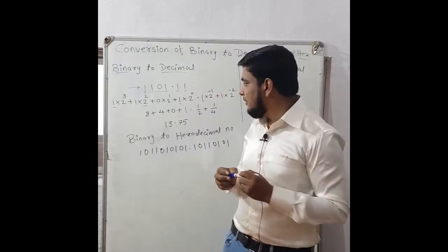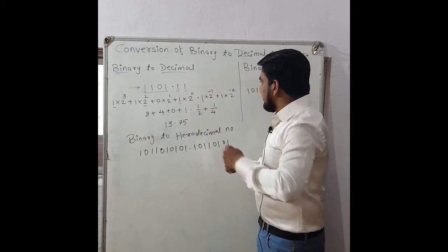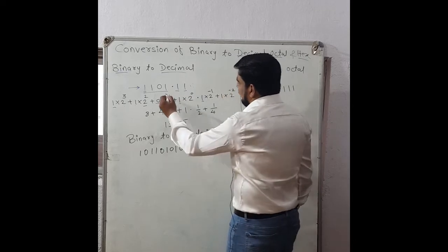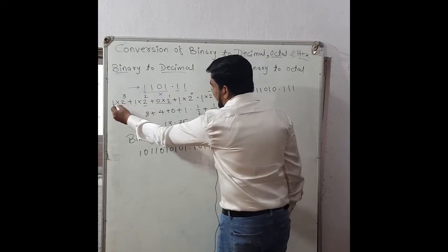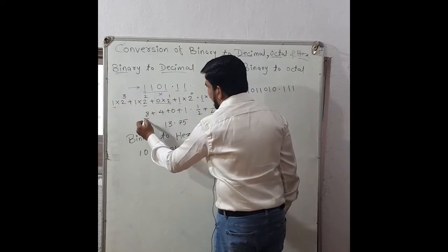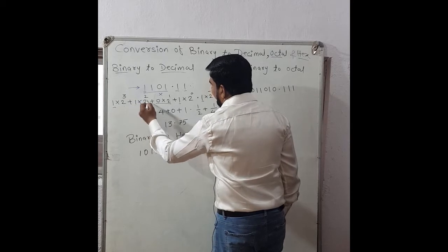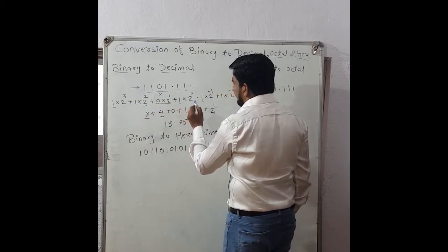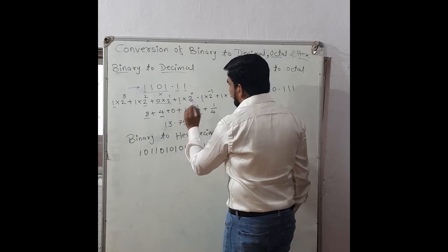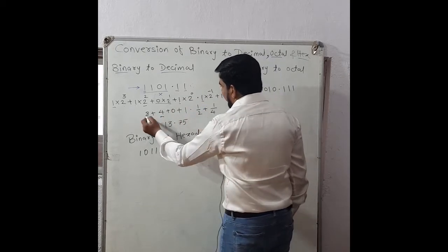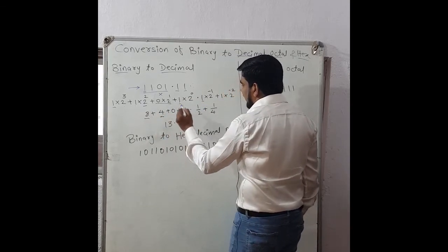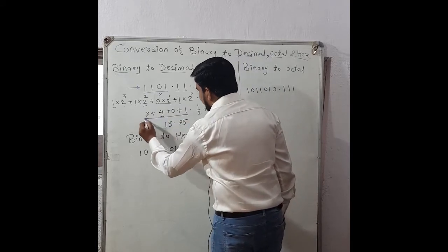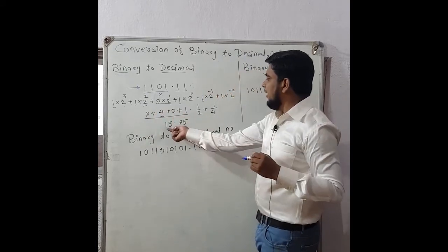The 0 term (0 into 2 raise to 1) gets cancelled. 1 into 2 raise to 3 is 8, 1 into 2 raise to 2 is 4, that term is cancelled, and 1 into 2 raise to 0 is 1. So we get 8 plus 4 plus 0 plus 1 equals 13.